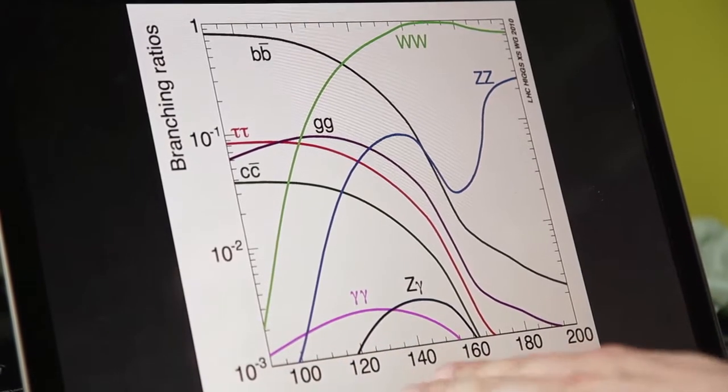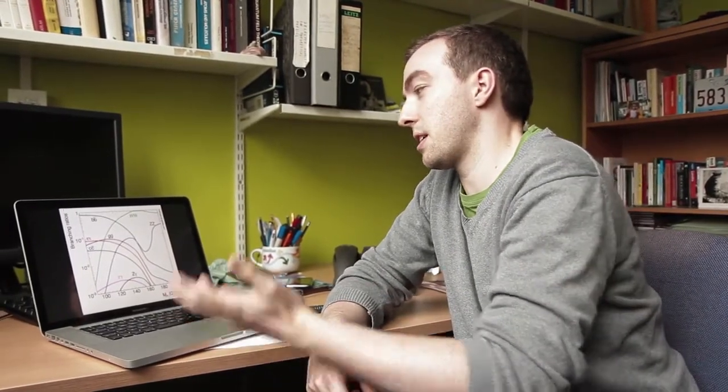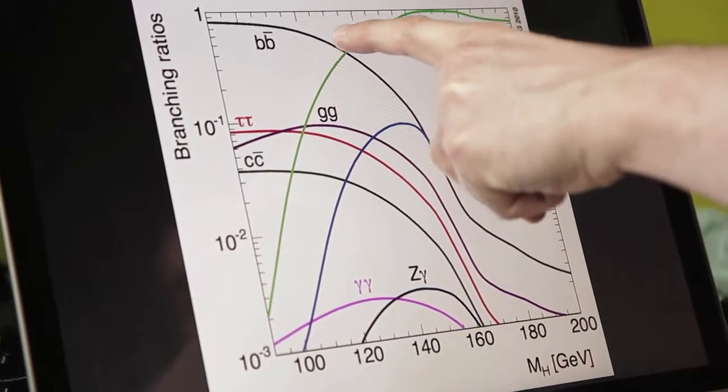This plot contains all the information about what particles you should look for if you want to see a certain mass Higgs. For example, for the Higgs mass that people are getting excited about at the moment, around 125 GeV, you can read off that about 60% of the time it decays to B quarks. And these B quarks will produce jets of particles in the detector.